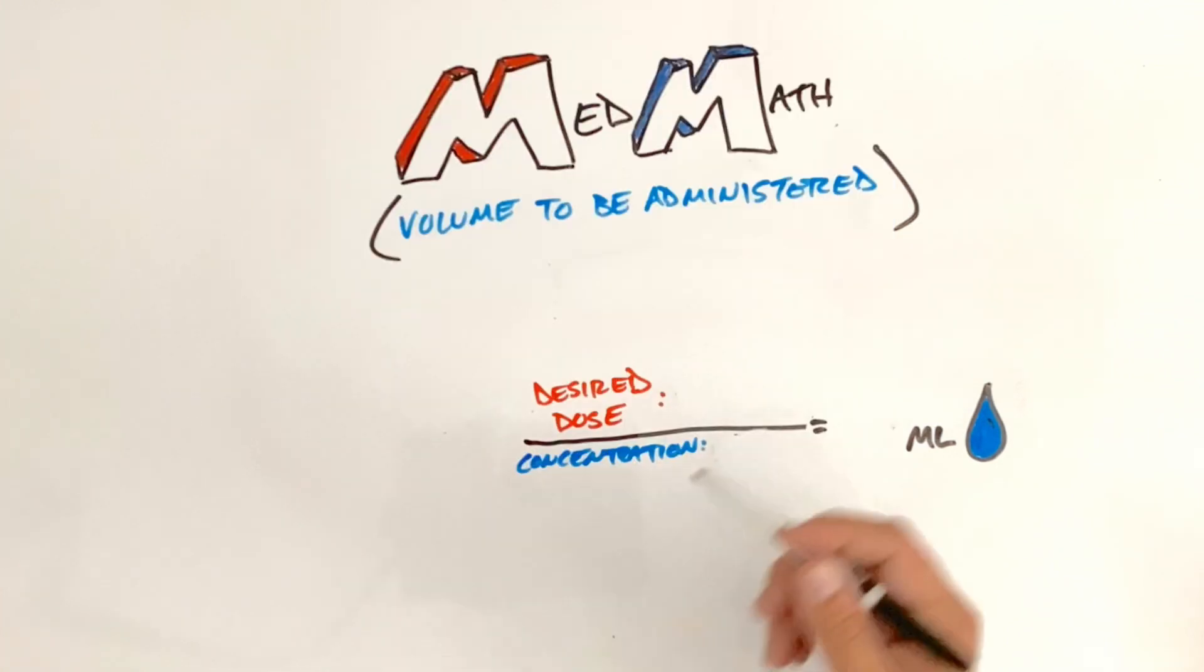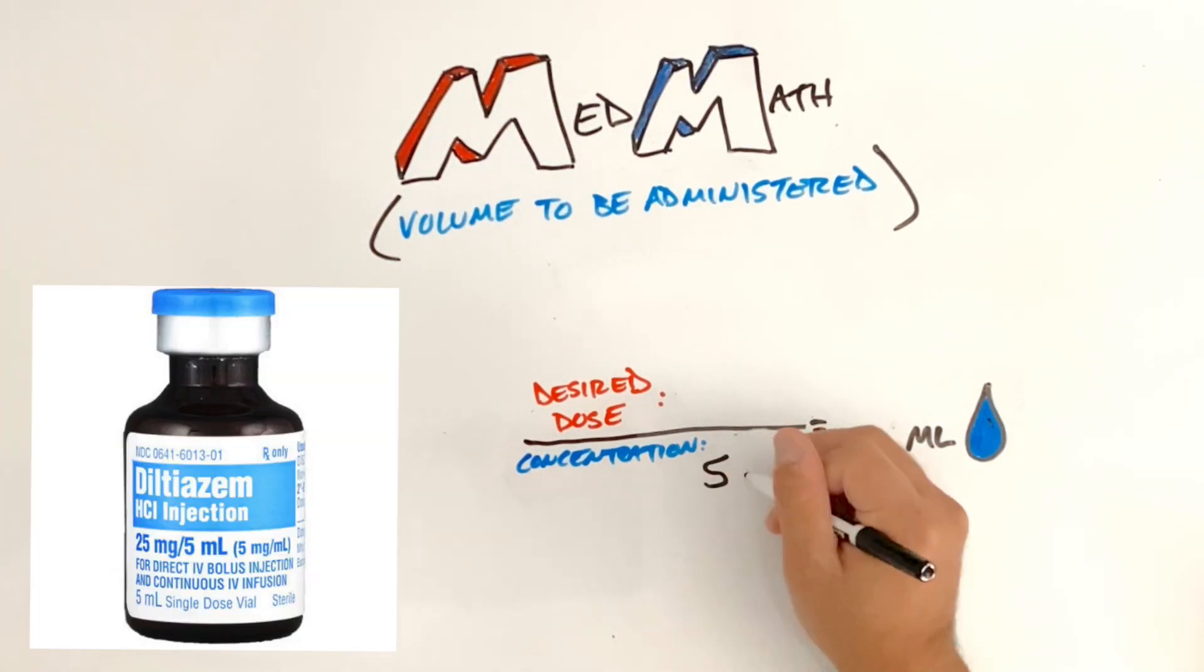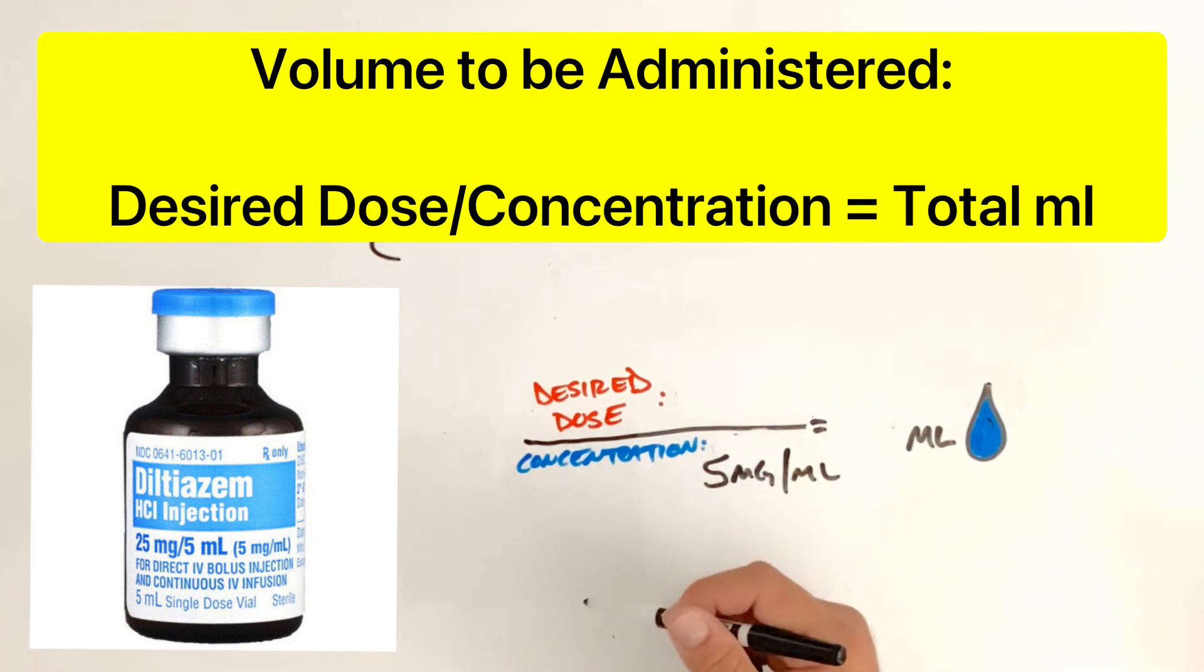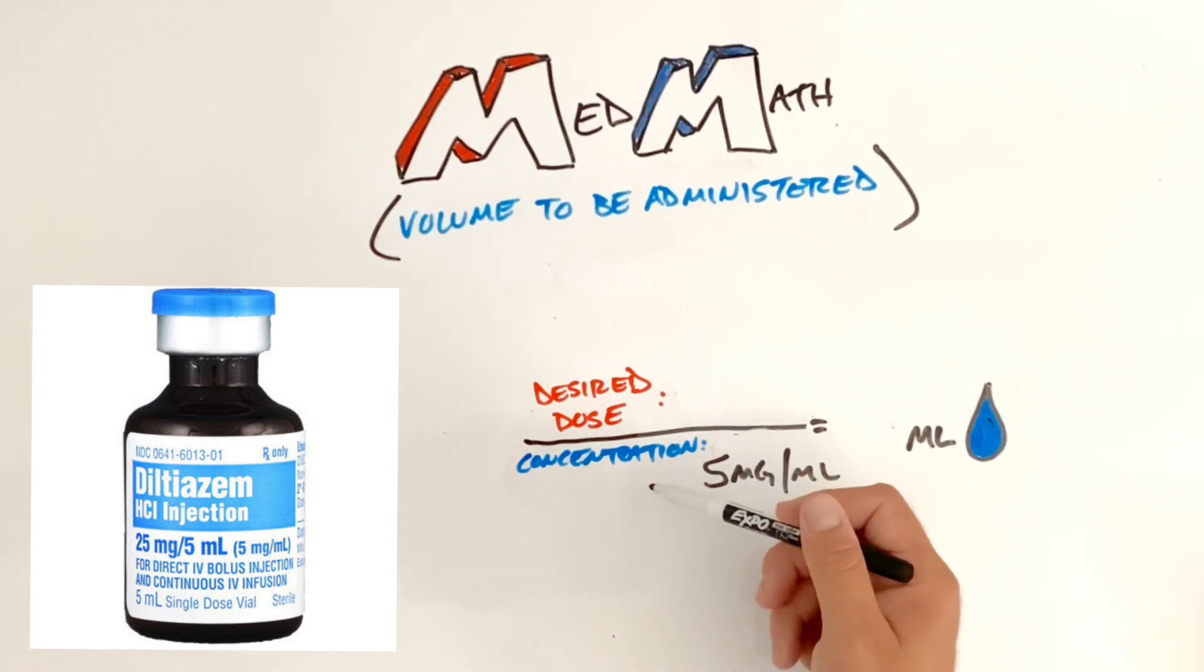So how much medication am I drawing up? We said that we have 5 milligrams per mL concentration. And our equation is simply going to be our desired dose divided by our concentration. What do we want? And what do we currently have on hand?